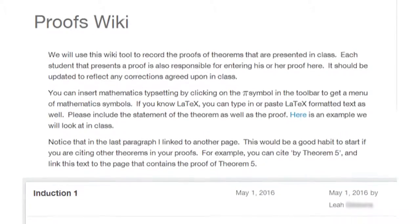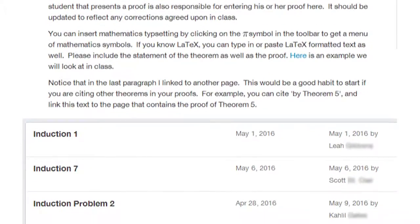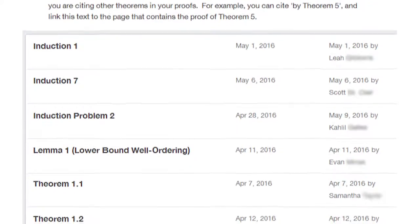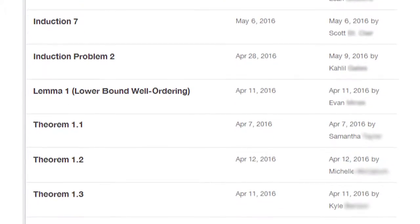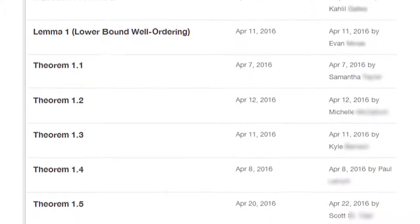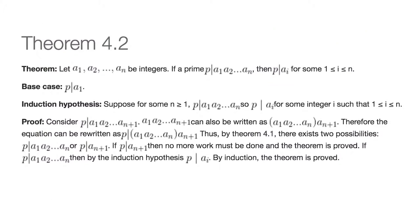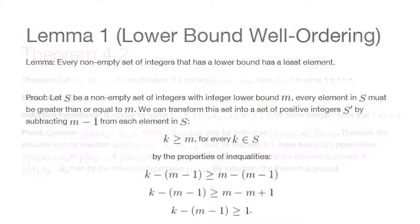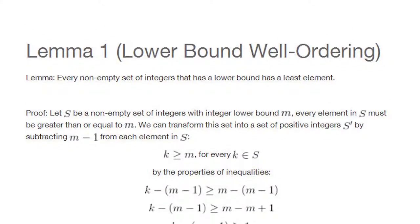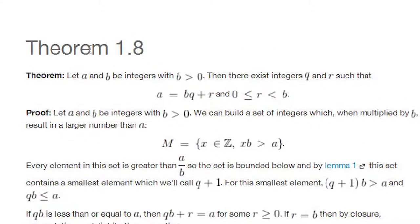Another thing that I do to help them have sort of a class set of finished proofs is we use our learning management system for the course. And so each person that presents a proof is responsible for, after they've had the feedback from the class, writing their final version as a page on the learning management system so that everybody can go and view that. And actually they can even edit it on there and give responses if they want. But that way we have sort of one version of a polished proof for each of the theorems that everybody can access, and so they can use that to study from as well.